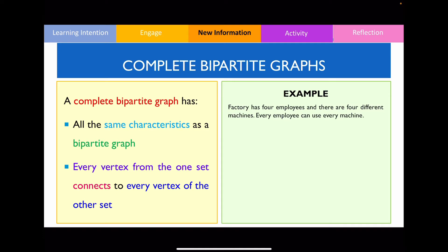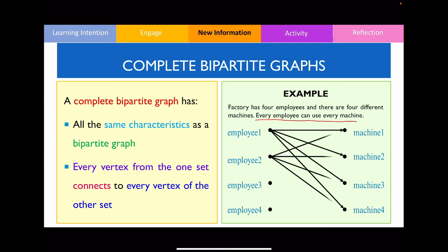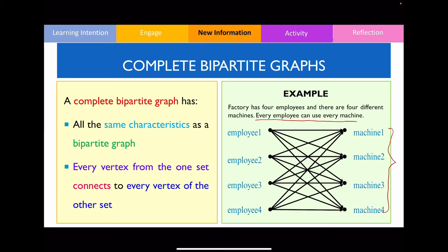To draw a complete bipartite graph, on one side of the dataset we name all the employees, and on the other side we list all the machines. Since every employee can use every machine, we draw an edge connecting each employee to every machine. Because every vertex from one side is connected to all vertices on the other side, we refer to this as a complete bipartite graph.